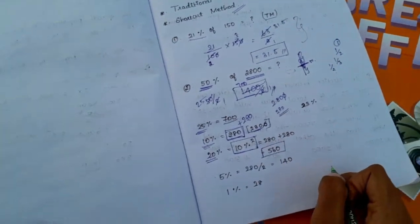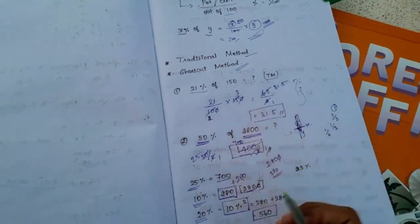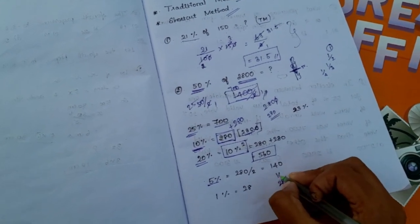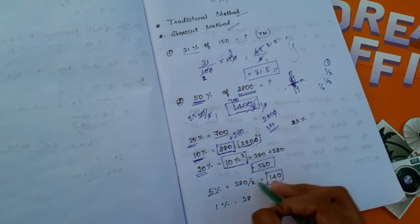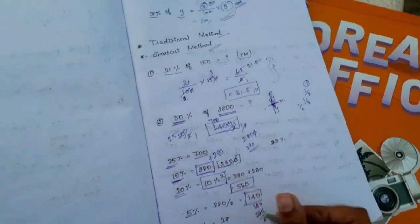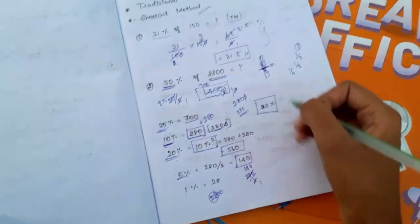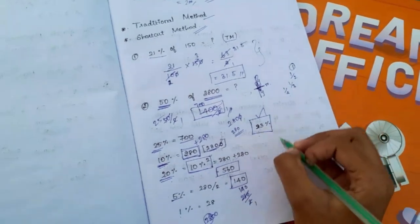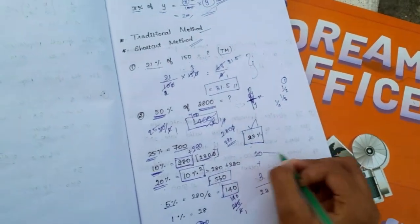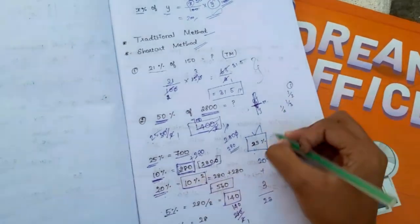This is a shortcut method. If you add a percentage of this portion, you can follow. If you add 10 percent, then 10% of 2800 is 280. You can add 240. If you add 1 percent, you can get 28. Now if you add 28, then 20 plus 3 is 23. 10% is already 280. So 23% of 2800.